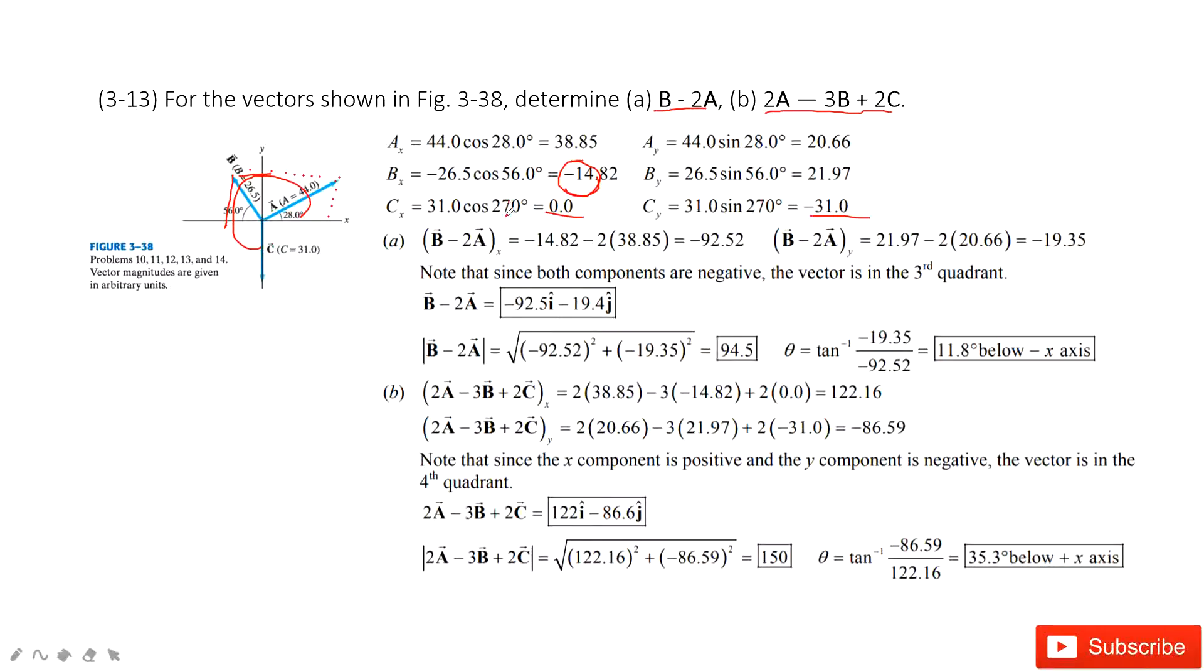We do the calculation for x and y components for b - 2a. We get bx - 2ax for the x component and by - 2ay for the y component. In this way, we get two components for this vector. Then we can get the magnitude and angle theta.